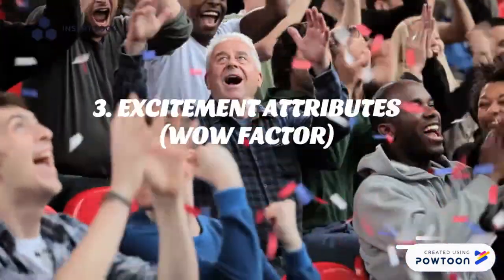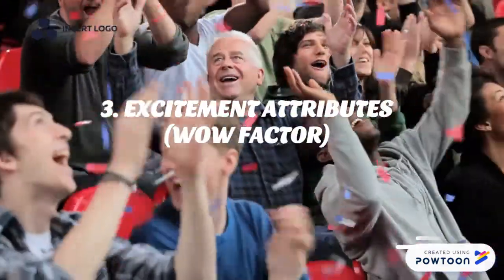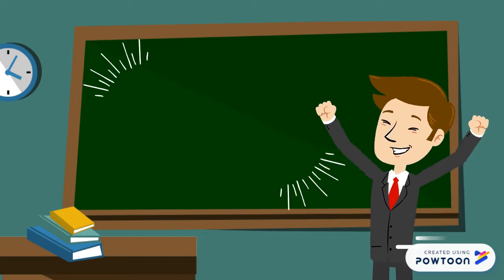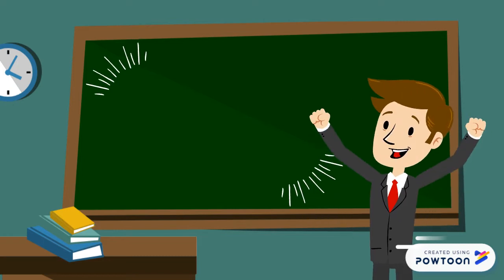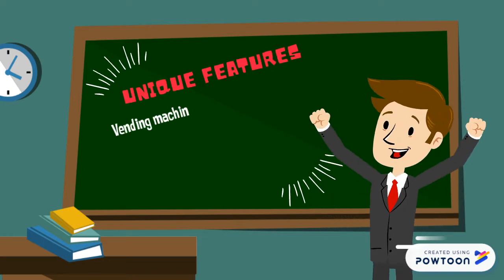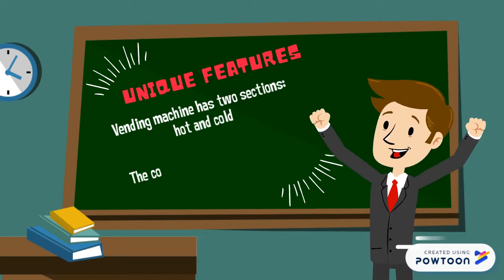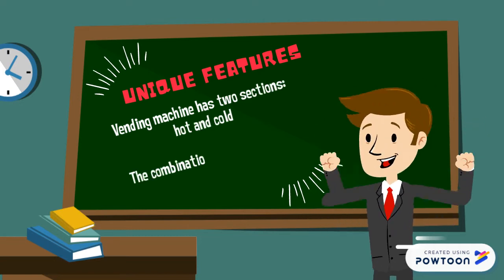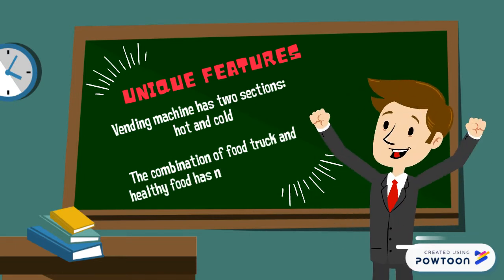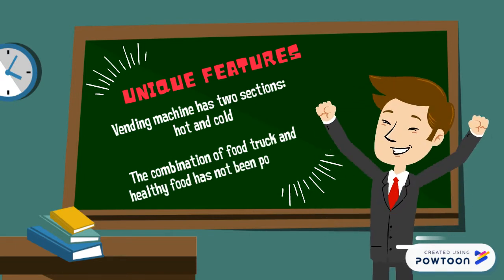The next factor is the Excitement Attribute. Our vending machine consists of two sections: hot and cold sections — hot ones to keep food warm and cold ones to store food and drinks. Besides, the combination of a food truck and healthy food has not been popular in Victoria. Therefore, we still believe that it is an interesting idea.